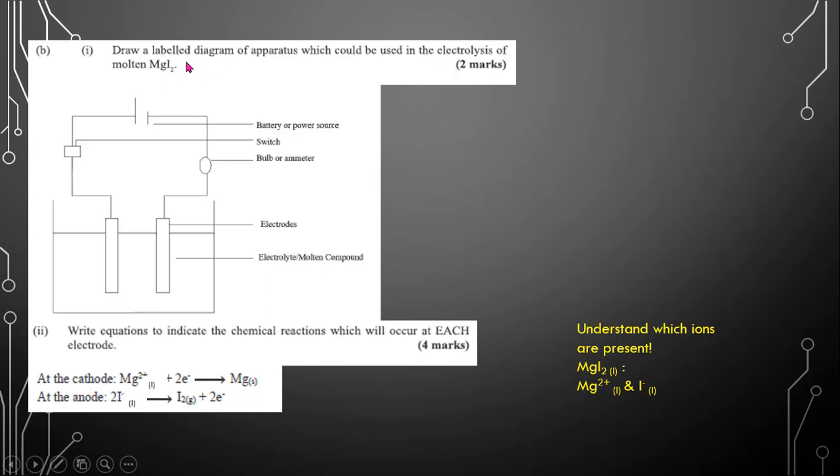So for this apparatus, you must have a power source. You must also have connecting wires, which both connect to electrodes. Two electrodes. It must be submerged at least three quarters. The electrode must be submerged at least three quarters in an electrolyte solution or a molten compound. You must also have a switch and a bulb or an ammeter.